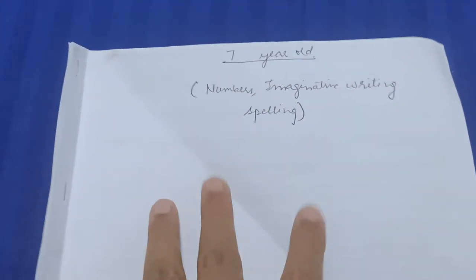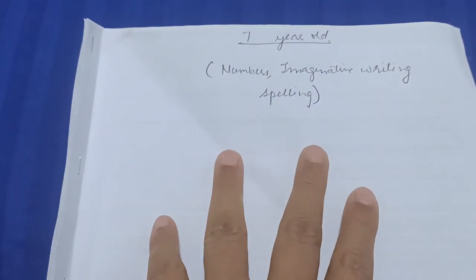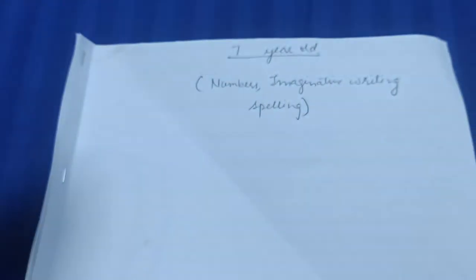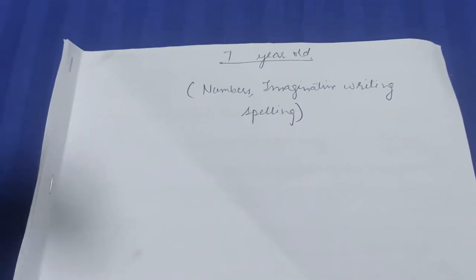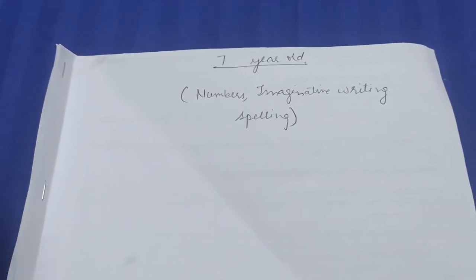Hello everyone, welcome to my channel. I'm Surabhi and this is a busy book for my seven-year-old which has some numbers, some imaginative writing—basically writing which doesn't have any correct or wrong answer.